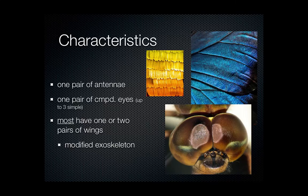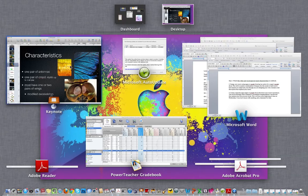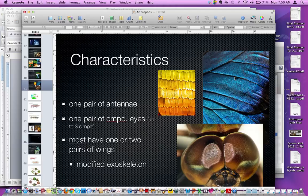The majority of insects have one or two pairs of wings, though not all — for example, you've probably seen an ant without wings. A wing is just an extension of the exoskeleton. If you look at a butterfly's wing, that is actually the exoskeleton modified. Many people wonder why touching a butterfly leaves color on your hands — it's because the wing is covered with tiny scales that have color in them.